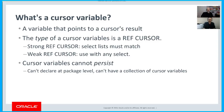One point to keep in mind: cursor variables don't persist the way a lot of other variables do. For example, you could declare a variable at the package level of type number as a global variable, but you can't declare cursor variables at the package level. You can even have a collection of cursor variables — they're pointers to active result sets in the database.